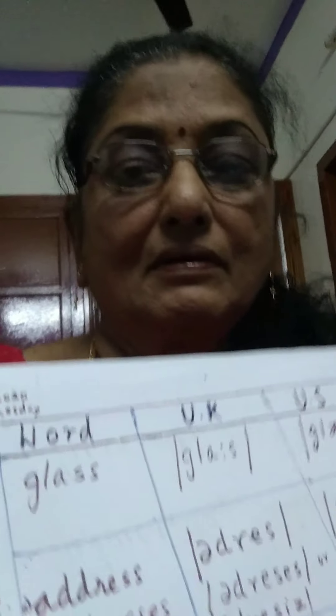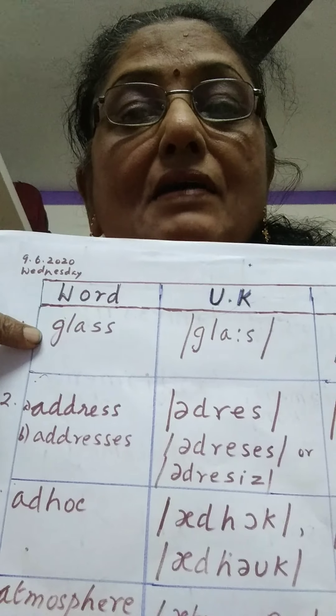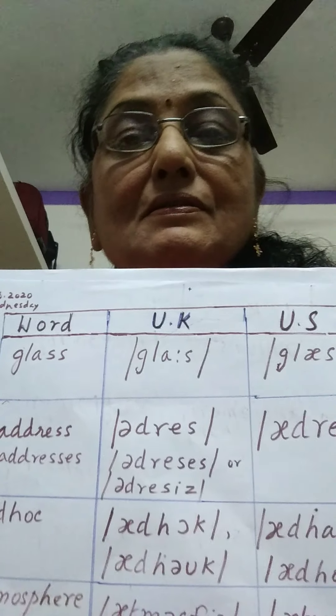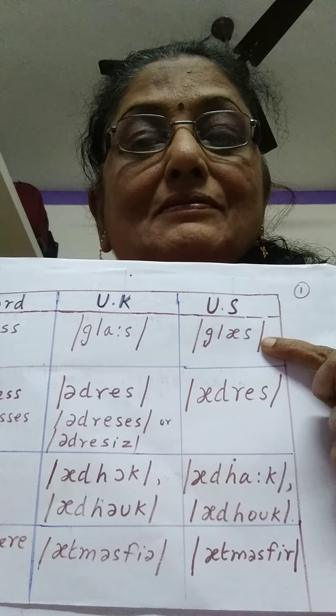Now I will show you the list. For example, taking the word 'glass.' Normally we say 'glass,' but it's actually 'glass' — that is the British pronunciation. 'Glass' is the American pronunciation.